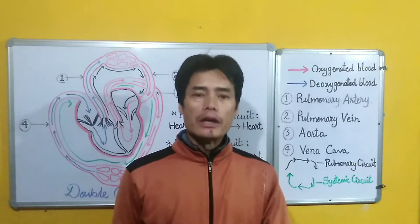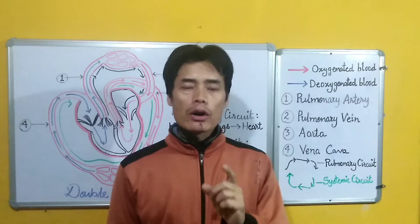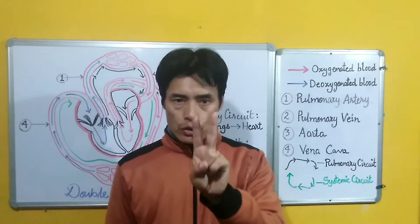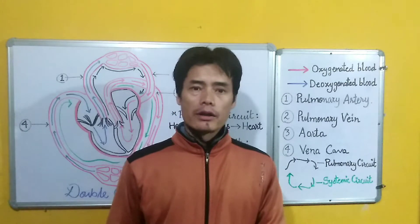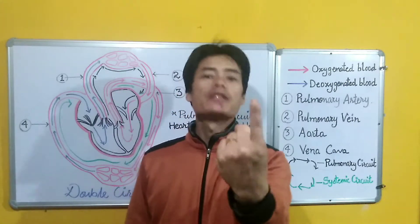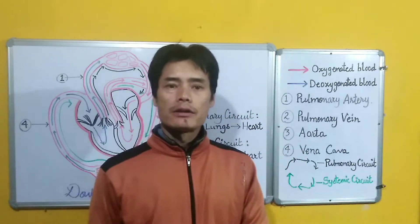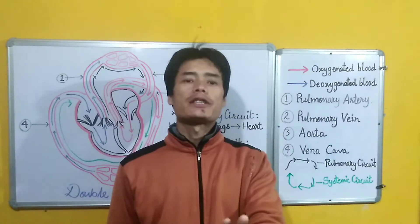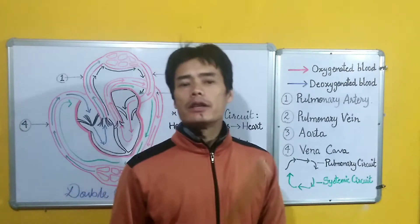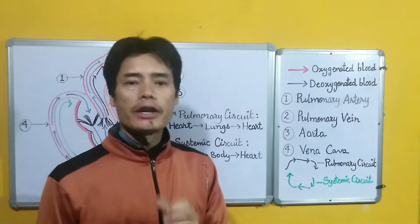Double circulation means the flow of blood through the heart two times before the blood gets circulated in the entire body to complete one circulation. This concept of the flow of blood inside the heart twice in order to complete one circulation throughout the body is referred to as double circulation.